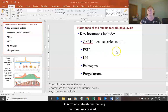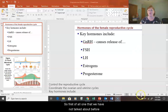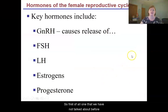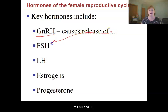Let's refresh our memory on hormones related to the female reproductive tract as well as some new ones. One that we have not talked about before is GnRH, or gonadotropin releasing hormone. GnRH is made by the pituitary and it causes the release of FSH and LH. So we have a lot of hormones stimulating the production of other hormones.